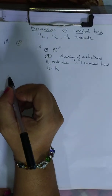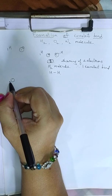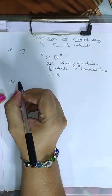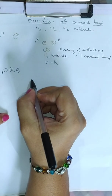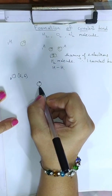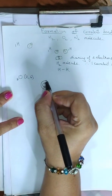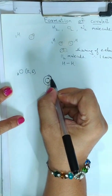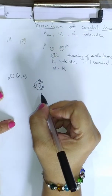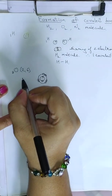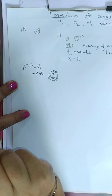Let us take another example of oxygen. Oxygen's atomic number is 8. Hence, its electronic configuration is 2 and 6 — 2 electrons in the first orbit and 6 electrons in the second orbit. But as it has 6 electrons in the outer shell, it is unstable and needs to complete its octet.